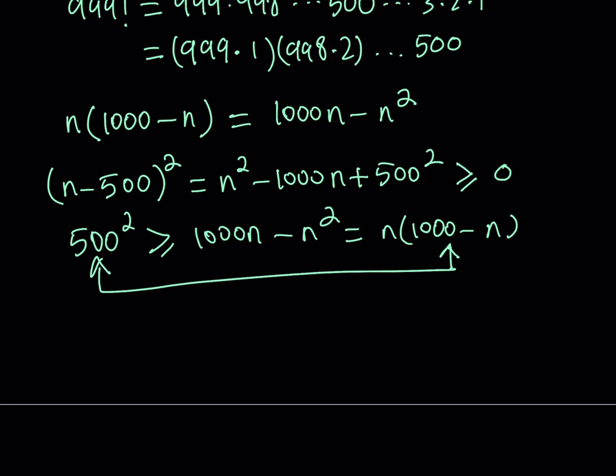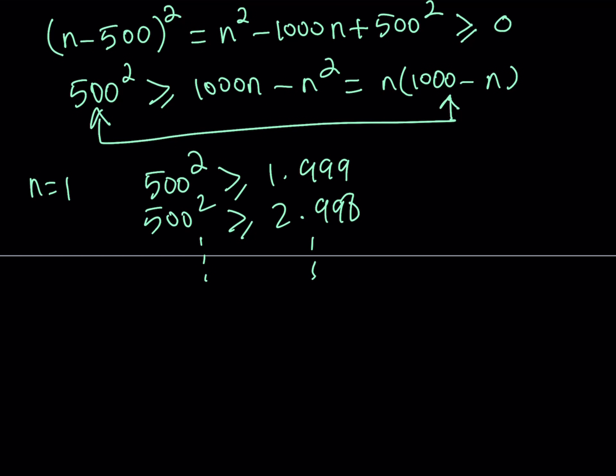So if I use n equals 1, this is going to give me 500 squared is greater than or equal to 1 times 999. And then if I keep doing it, 500 squared is going to be greater than 2 times 998, dot dot dot. And now you're going to notice that we're not going to use 500 because it doesn't pair up. So I'm going to end with the two numbers that are in the middle, excluding the 500. So those numbers are going to be 499 and 501.